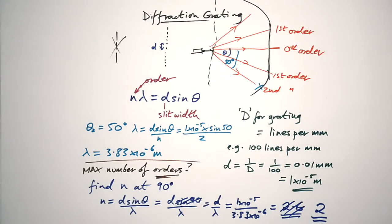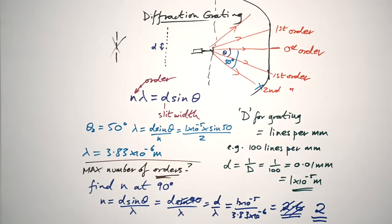That's interference in a nutshell — single slit, double slit, and diffraction grating diffraction. If you think I've missed anything or have any questions, put them in the comments below and I'll get back to you as soon as I can.